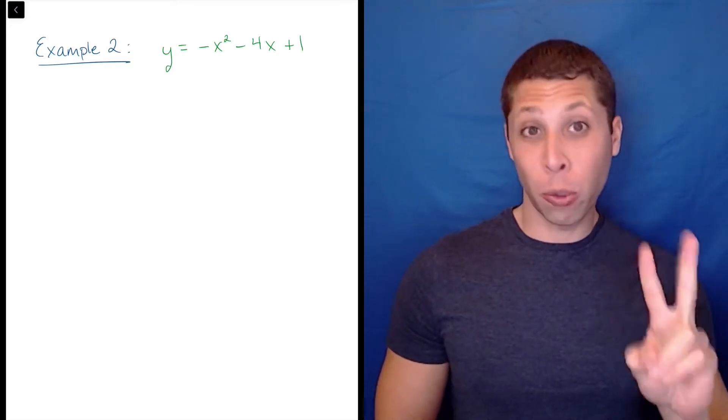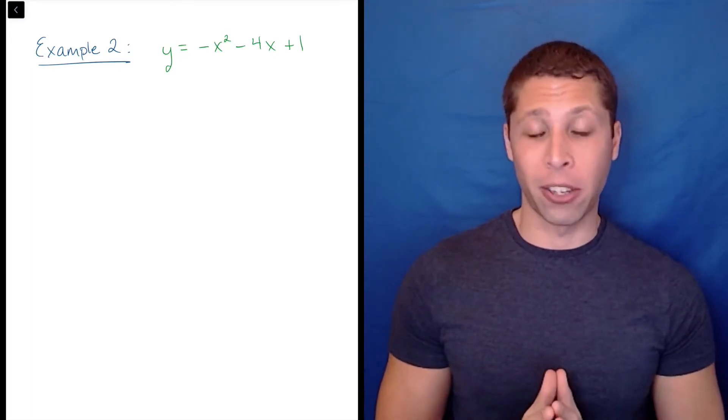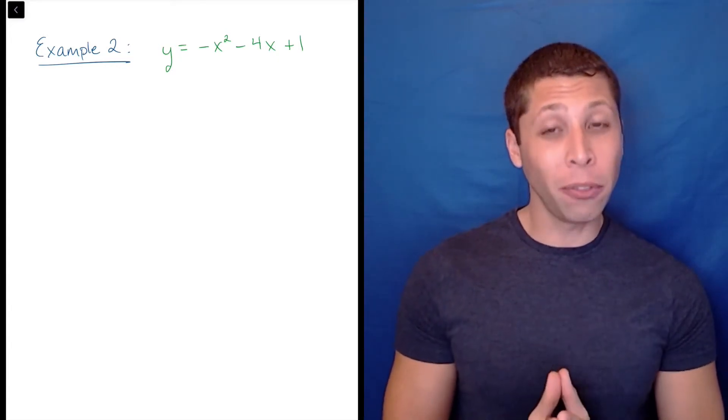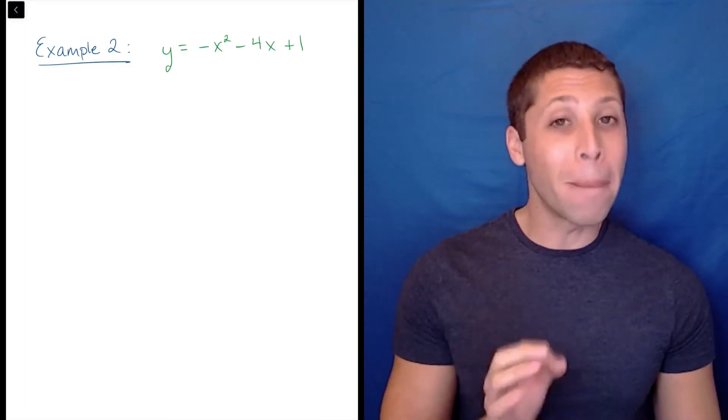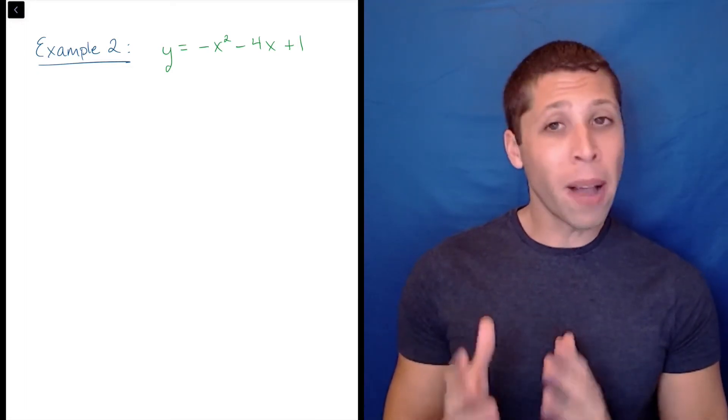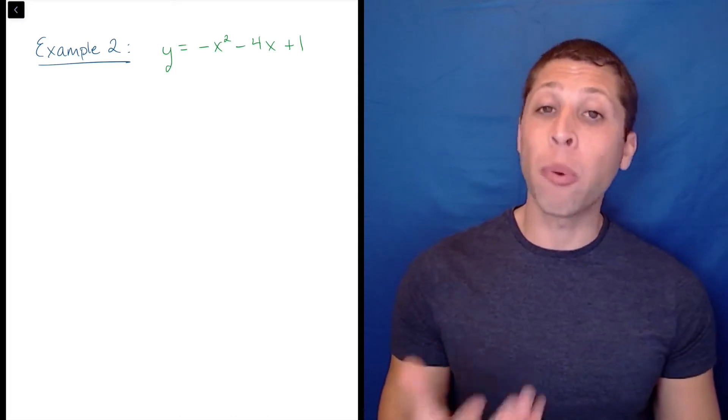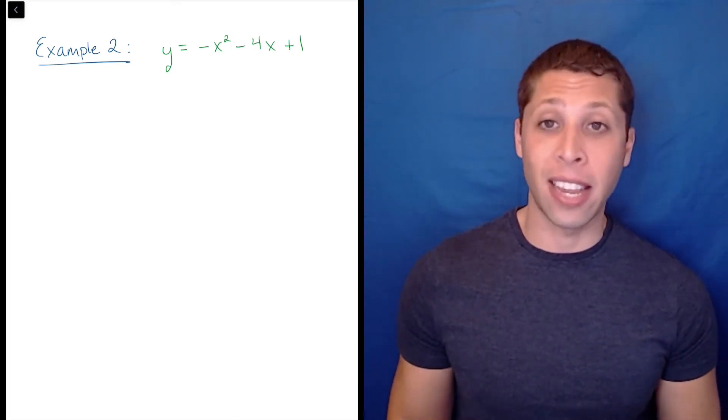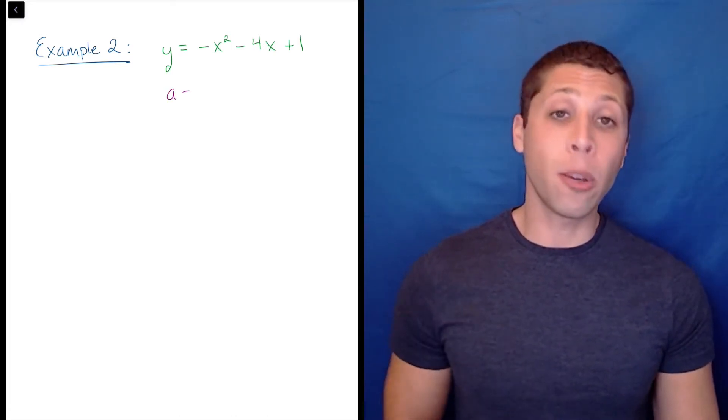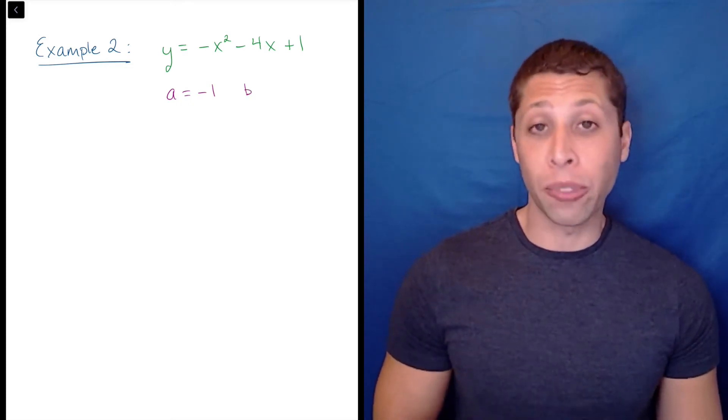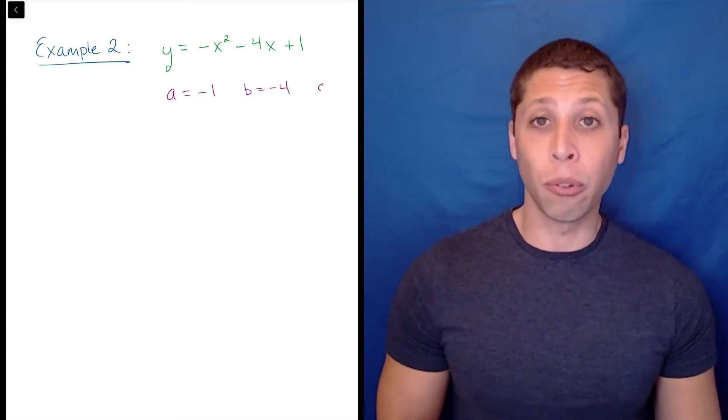There are two big twists that can make this process difficult. First, be careful when the equation includes minus signs. Those minuses are going to behave like negatives when we find the values of a, b, and c. In this case, a equals negative 1, b equals negative 4, and c equals 1.